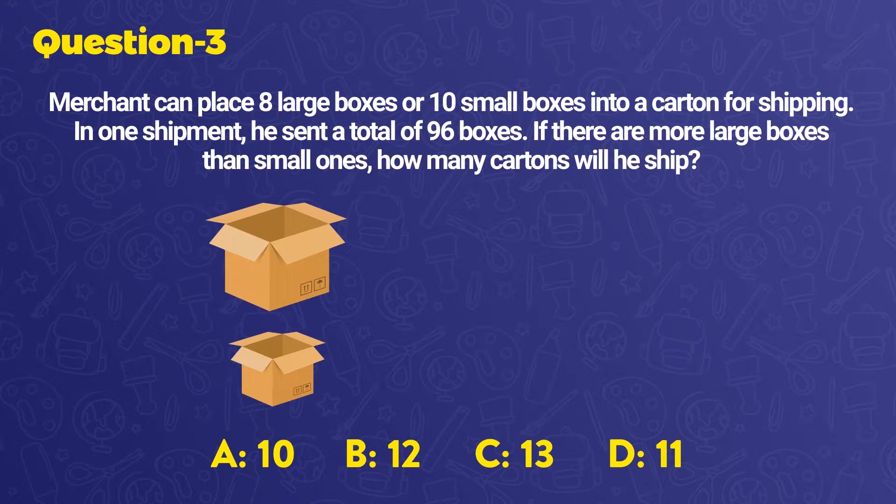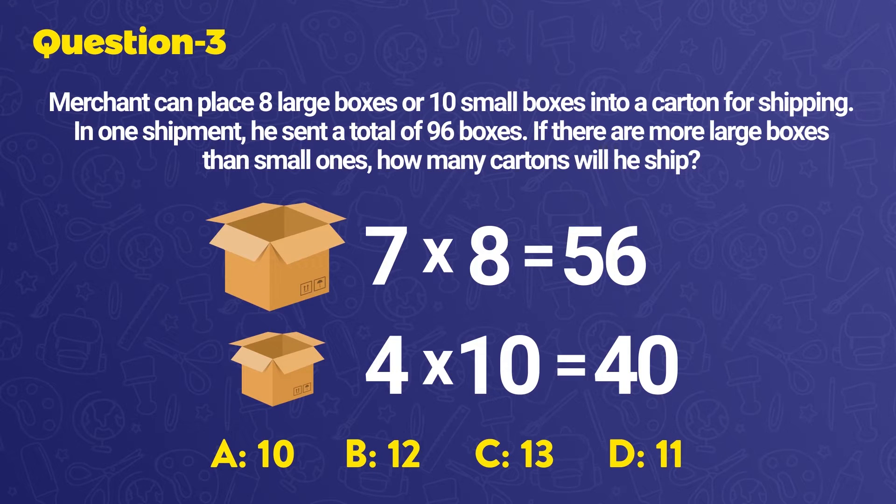When we look at the numbers of the large boxes, we see that there should be 7 of them. Because when we multiply 7 by 8, we obtain 56. Now, we should count the small boxes and get 40. To do this, let's multiply 4 by 10 boxes.